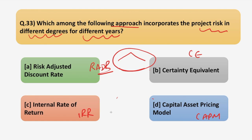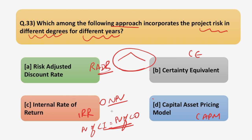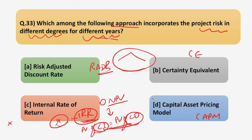IRR is a discounted cash flow technique for evaluating capital budgeting proposals. It is defined as the discount rate which produces zero NPV — that is, the rate which equates the present value of cash inflows with the present value of cash outflows. This rate does not change year by year; one rate is determined for IRR based on the cash inflows and outflows over several years. Therefore IRR is not the answer, as we need an approach that incorporates risk in different degrees for different years.